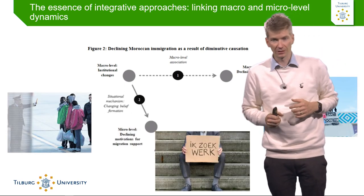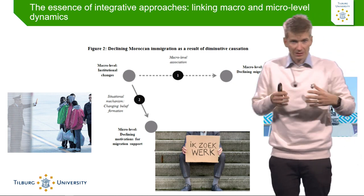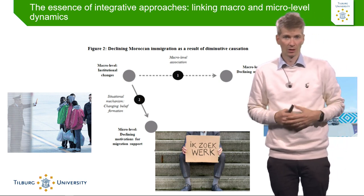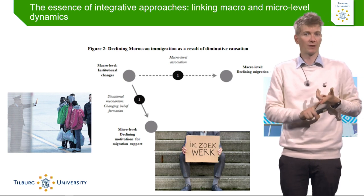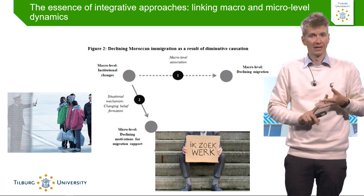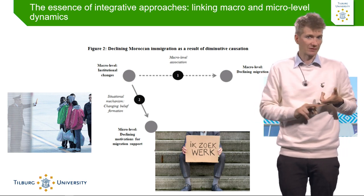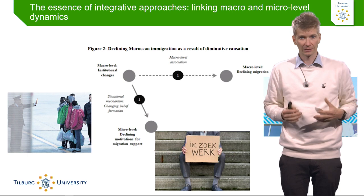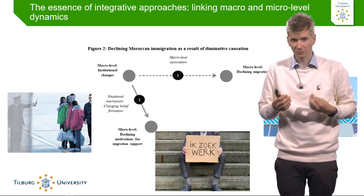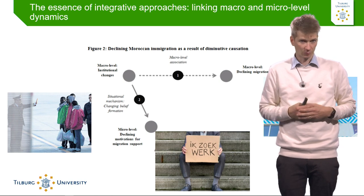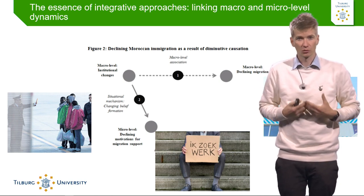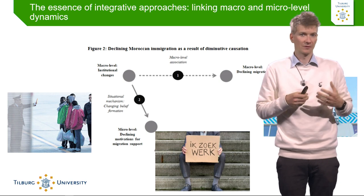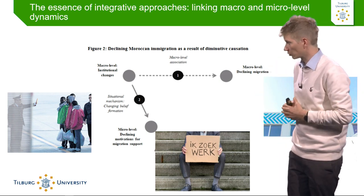Let's talk first about the situational mechanism — there is a change in belief formation. The Netherlands became much more restrictive in allowing migrants; it became much more difficult to find a job in the Dutch labour market. At the same time, there was the rise of anti-Muslim and anti-migrant rhetoric from different political parties in the Netherlands, which changed the way migrants were perceived by the general public. This meant that migrants already in the Netherlands were actually less likely to support people who would come to or aspire to come to the Netherlands.